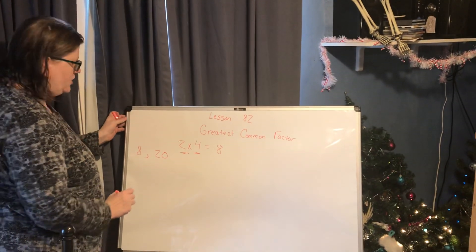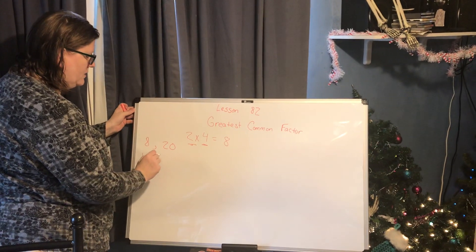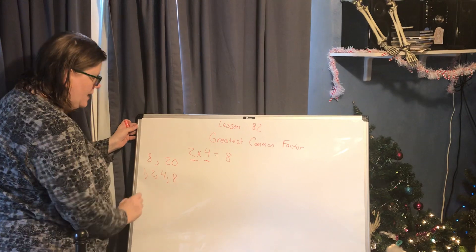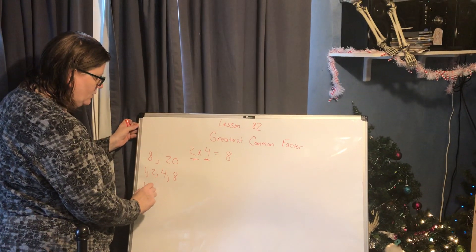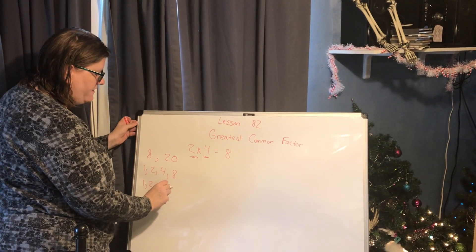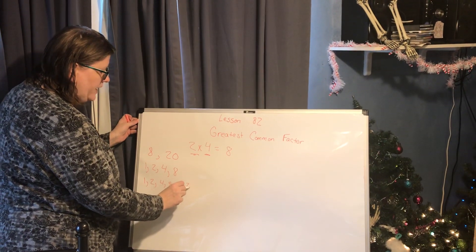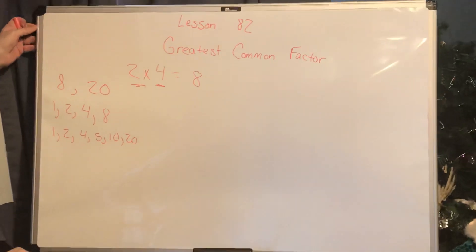So for 8, we have 1, 2, 4, and 8. For 20, we have 1, 2, 4, 5, 10, and 20. We then look to see which number is the highest that they have in common.